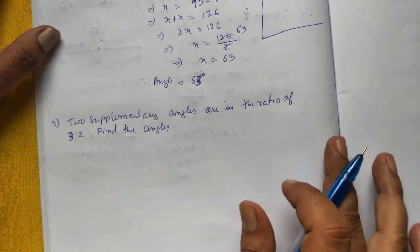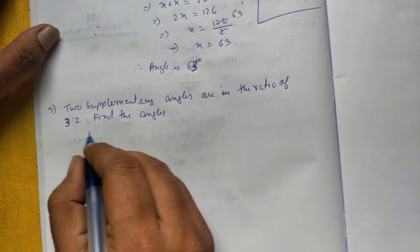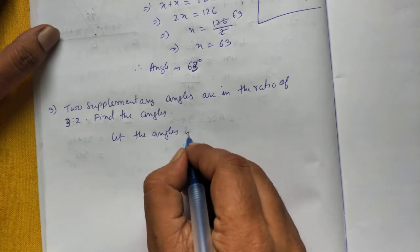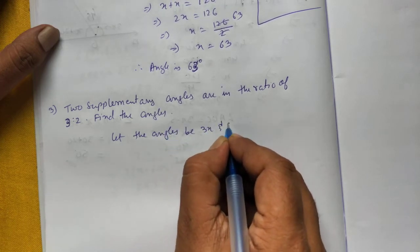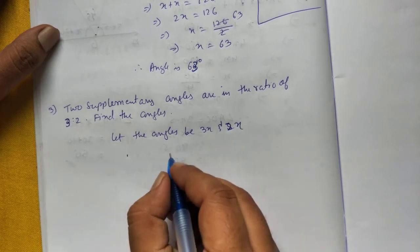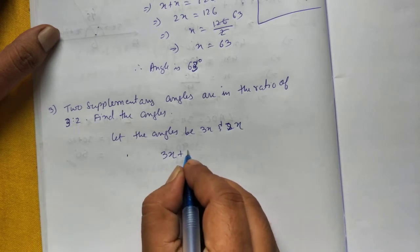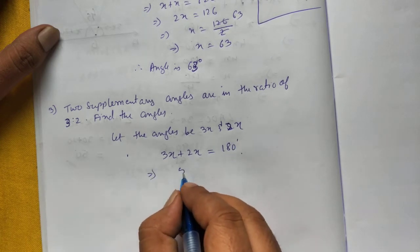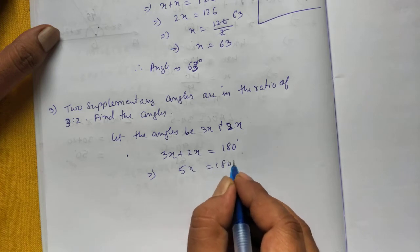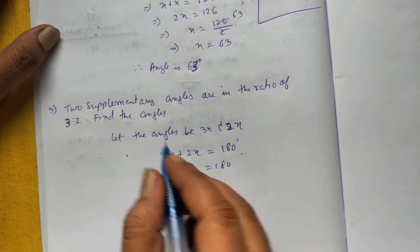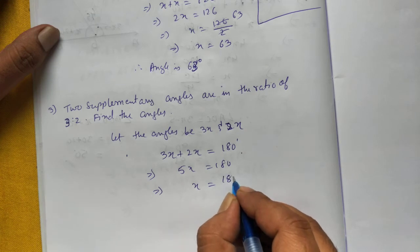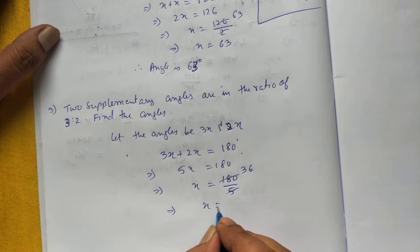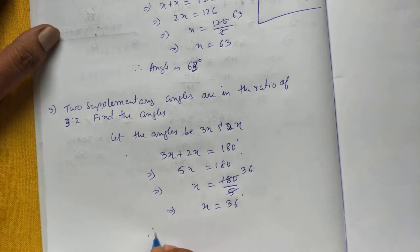Two supplementary angles are in the ratio 3:2. So whenever given ratio, we will take X. Let the angles be 3X and 2X. Supplementary angle means if I add, supplementary angle will be always 180 degrees. 5X equal to 180. 180 by 5, 5 goes 3 times, 6. So X is 36.